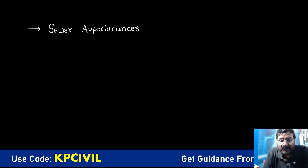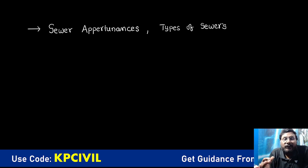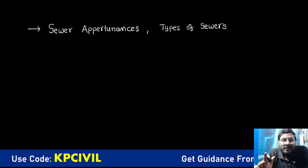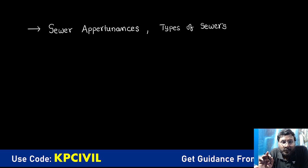Sewer appurtenances — must two to three questions. Under this, you also include types of sewers, manholes, and whatever related content. Compulsory at least two questions you can get. If it is a state AE exam, you may expect three to four questions. These are topics which are not covered in GATE or ESE at all — not in their syllabus. This is an exclusive topic in SSC JE and state exams, so this is the most important topic.